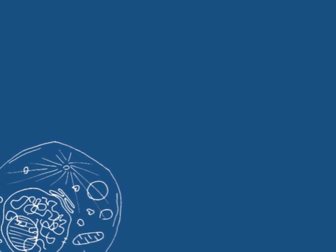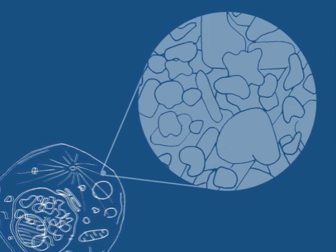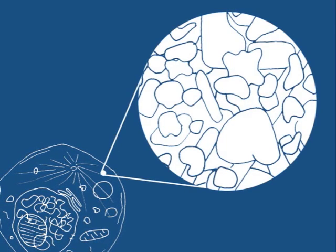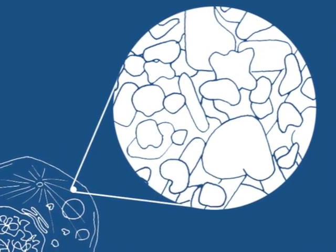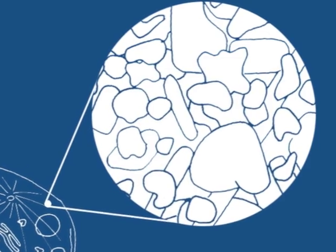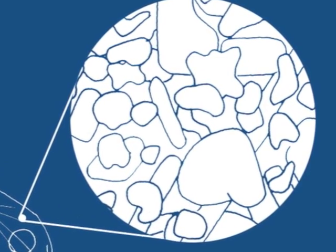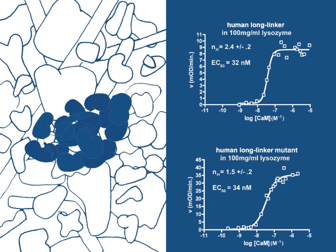The interiors of cells are crowded environments, with protein concentrations on the order of 300 mg per mL. Could such a large conformational change between compact and extended forms of the holoenzyme be sensitive to molecular crowding? We measured the activation of long linker isoforms under simulated crowding conditions, and observed that in this context, mutations affect activation of the enzyme. This suggests that the strength of interactions observed in the structure are modulated by changes in the linker.